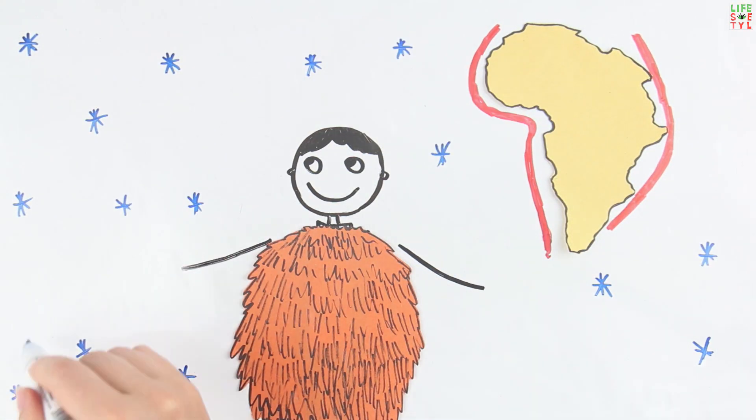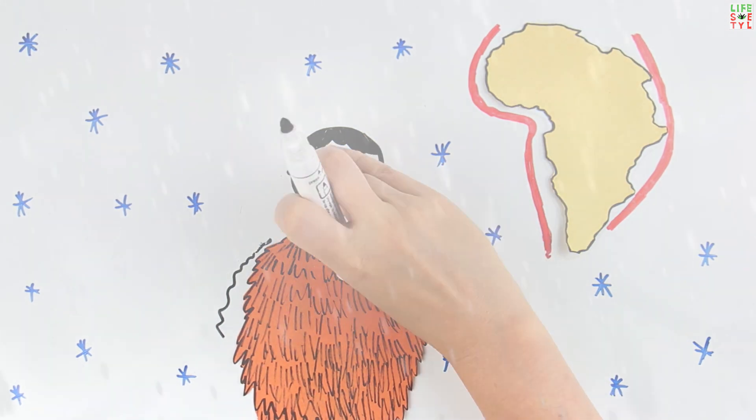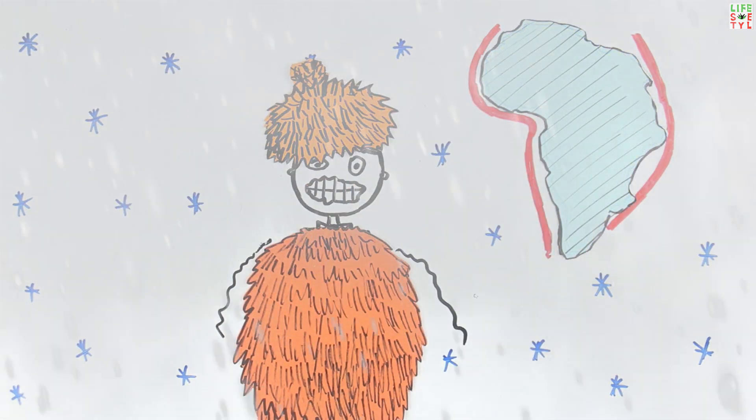And now the bad news. First, do not hope that it is warm here. An ice age has just begun on Earth and a continuous sheet of ice is forming in the Arctic.